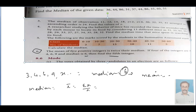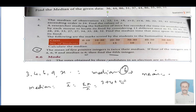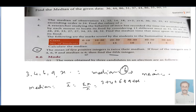We add the numbers: 3 plus 4 plus 6 plus 9 plus x. We add 6 plus 9 plus x. The total of the known integers is 22. If we divide by n, which is 5, we get the mean.